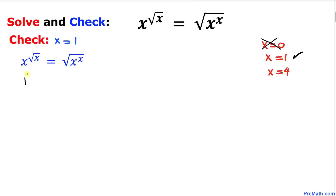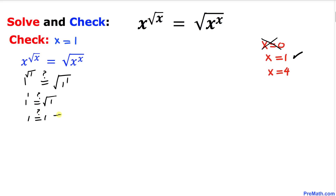Now let's check x equal to 1. Filling in: 1 to the power square root of 1, which is 1 to the power 1, equal to square root of 1 to the power 1, which is also 1. So 1 equals 1 — this statement is true, therefore we accept x equal to 1.